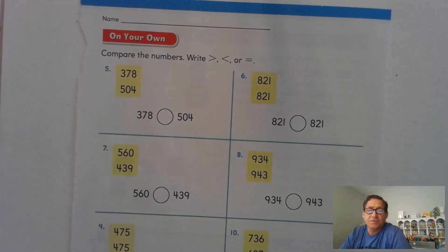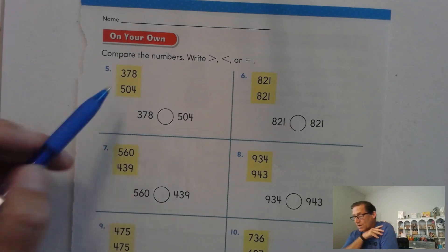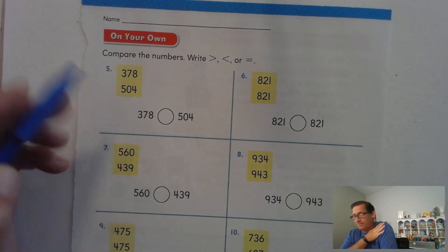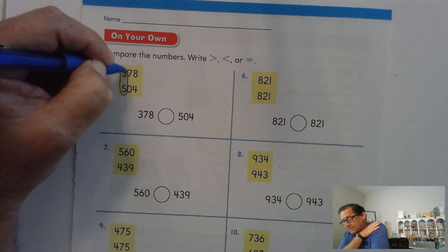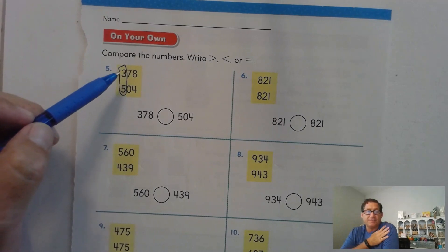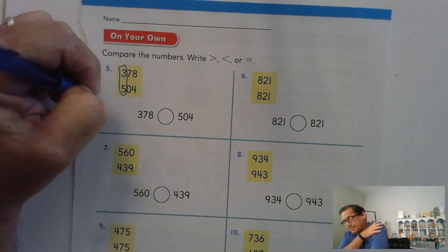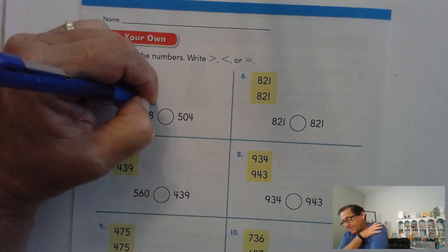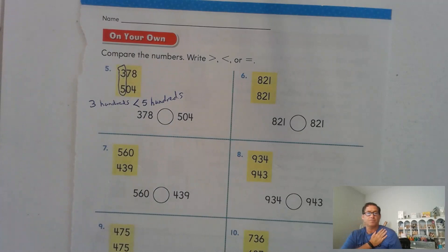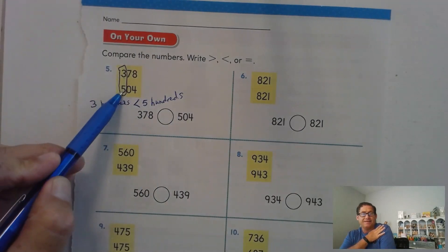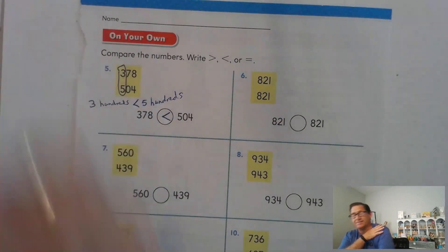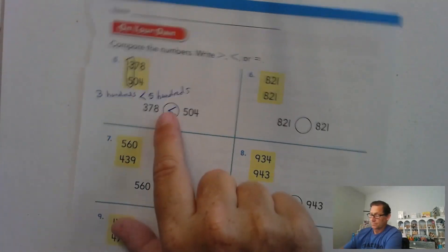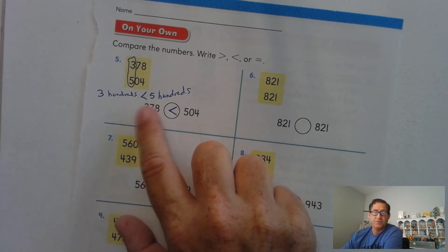Let's look at page 103. Again, compare using writing greater than, less than, or equal to. 378 compared to 504. If we look at just the hundreds, we start at the hundreds place. That's the greatest place value position. 3 hundreds is less than 5 hundreds. So if that's true, then 378 is less than 504. The point of the symbol is pointing to the smaller number.